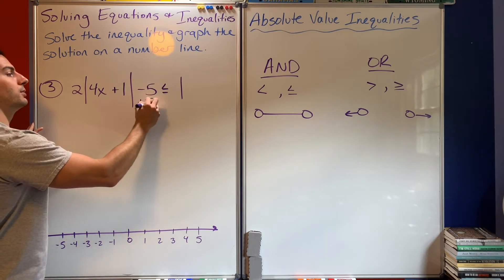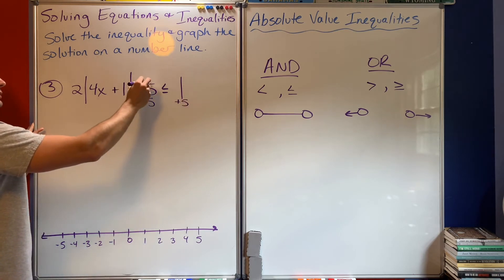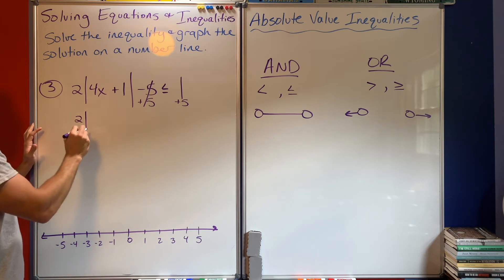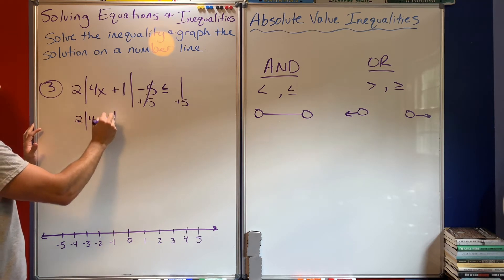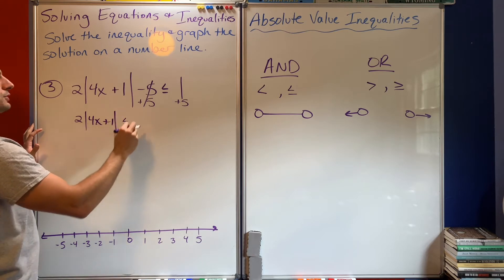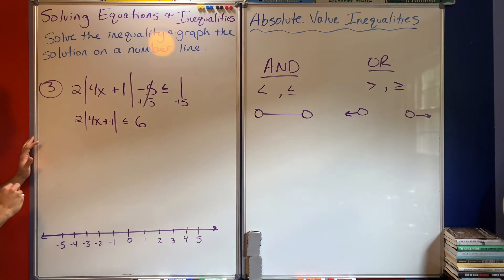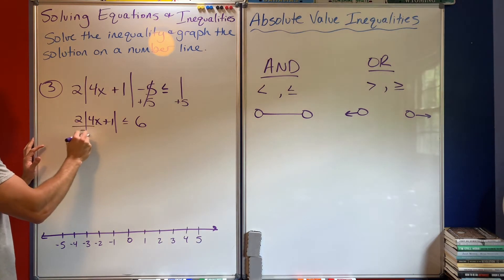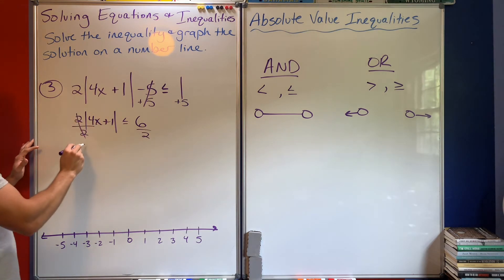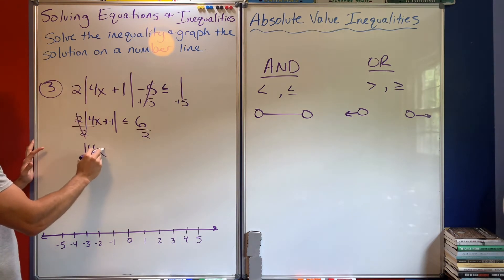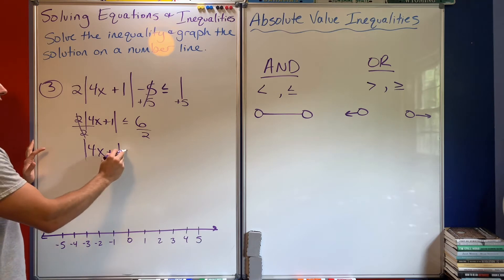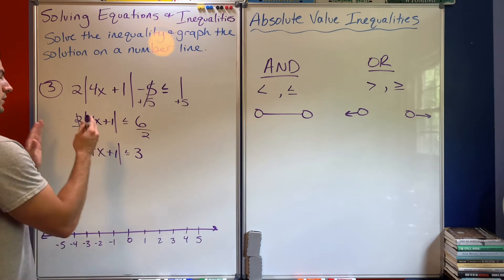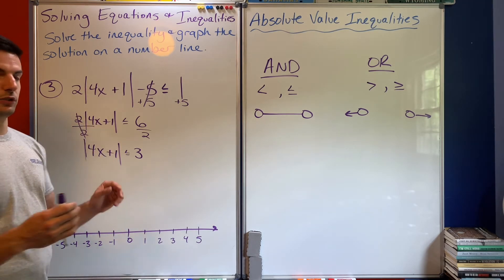So I plus 5 to both sides to cancel out the minus 5, since that's not part of the absolute value. I'm left with 2 times |4x + 1| is less than or equal to 6. Now I divide by 2, and I'm left with |4x + 1| is less than or equal to 3. Now the absolute value is by itself and I'm ready to split it.